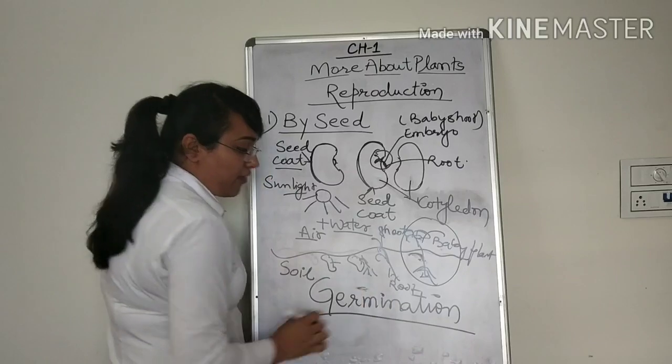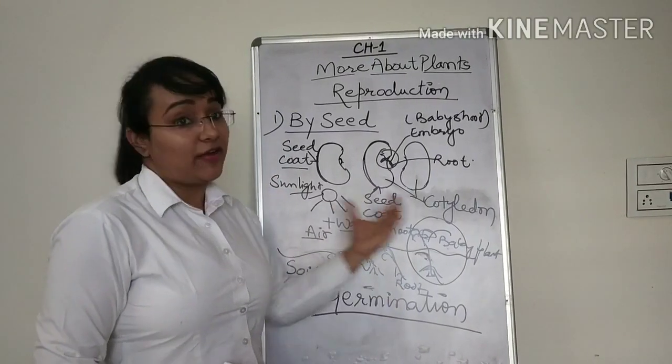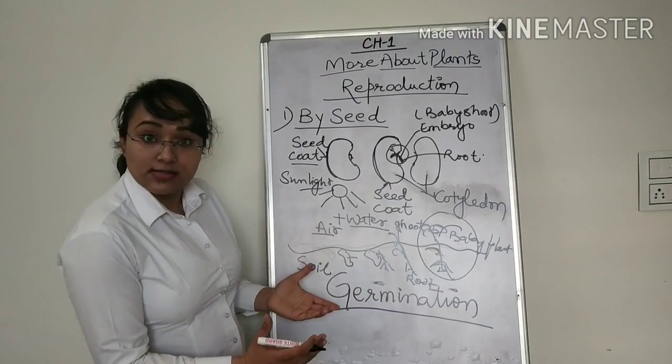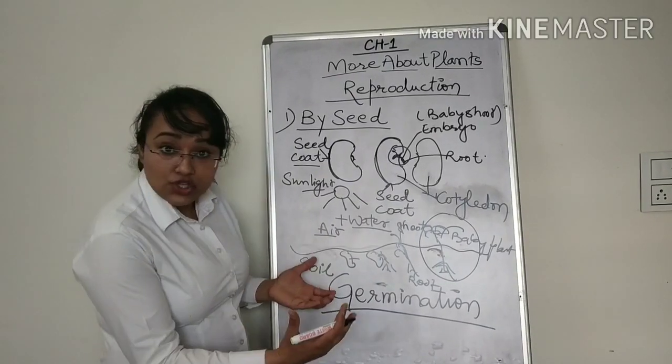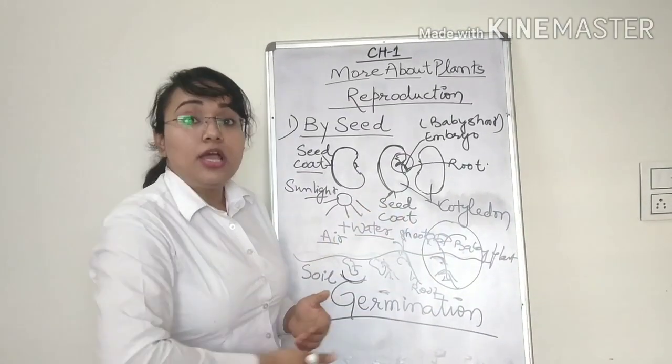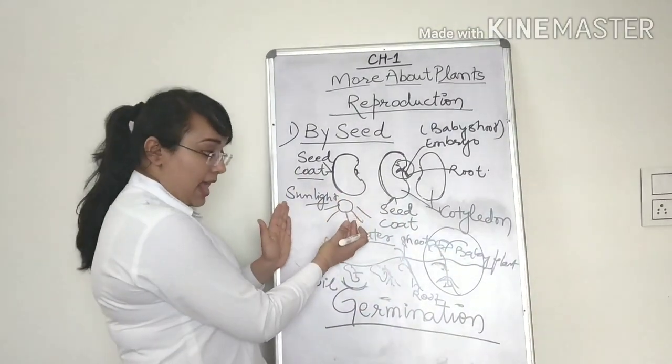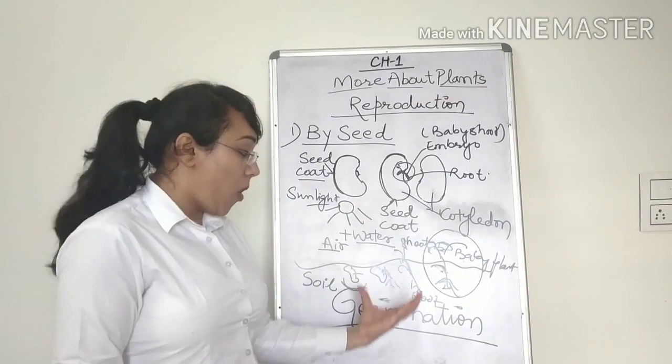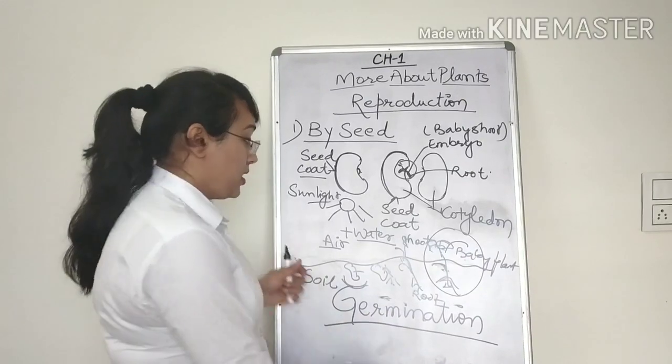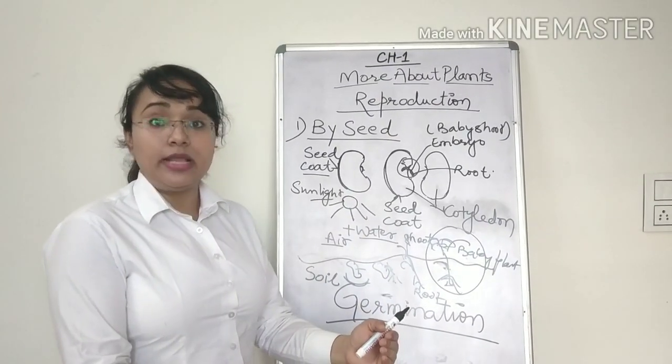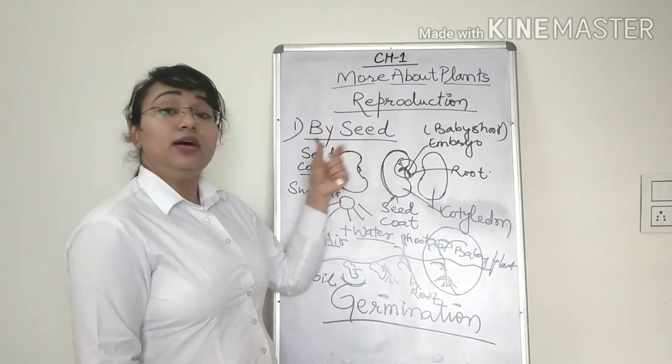Now what if I ask you to write the definition of germination? It is the process by which a seed grows into a baby plant using sunlight, water and air. So this process is called germination. So here we have seen the reproduction in plants by using the seeds.